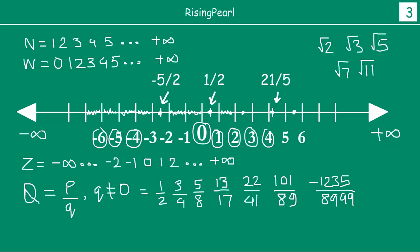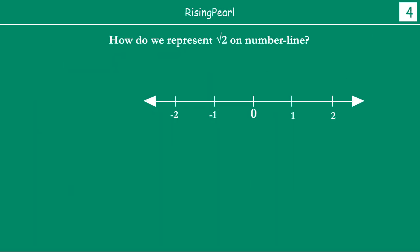So, let us look into this. Now, remember first, how do we represent square root 2 on the number line? We have a number line with 0, 1, 2 and then we have minus 1, minus 2.